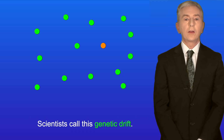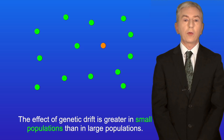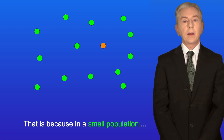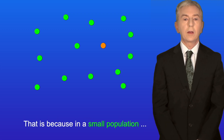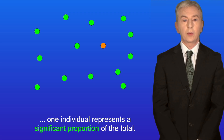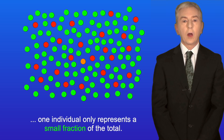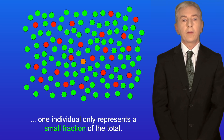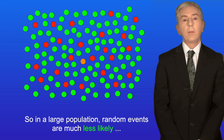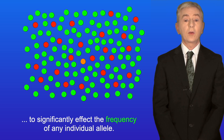Scientists call this genetic drift. The effect of genetic drift is greater in small populations than in large populations. In a small population one individual represents a significant proportion of the total, whereas in a large population one individual represents only a small fraction. So in a large population, random events are much less likely to significantly affect the frequency of any individual allele.